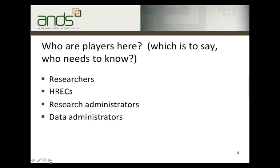So who are the players here — which is to say, who needs to know all this stuff? The ethical conduct of research is a complex business involving many players. Researchers of course are the first who come to mind, but they work within an administrative framework which oversees their research practice. Human research ethics committees are central to overseeing the design and conduct of this kind of research. Others engaged in research administration provide information and guidance for researchers. Data administrators are those who ensure that data is securely stored and accessed — important not just during the research but for later curation, preservation and access.